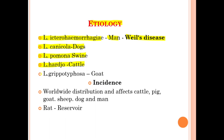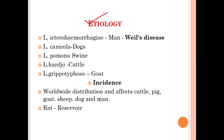In goats the causative agent is Leptospira grippotyphosa. Regarding incidence, leptospirosis occurs worldwide and affects cattle, pig, goat, sheep, dog, and human beings. The rat acts as the reservoir for this bacteria.